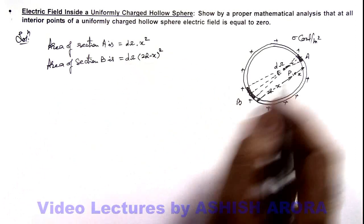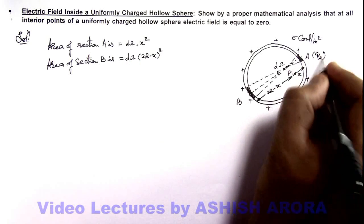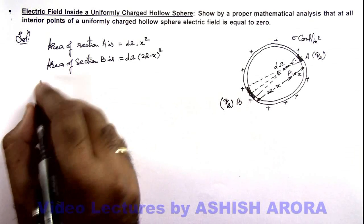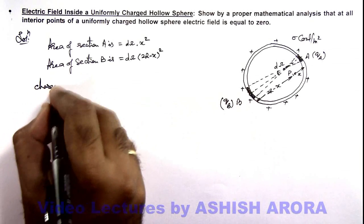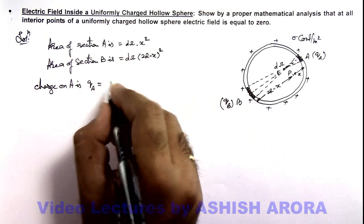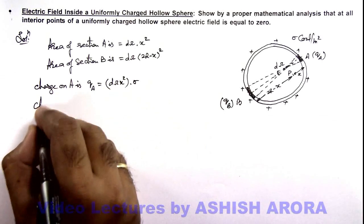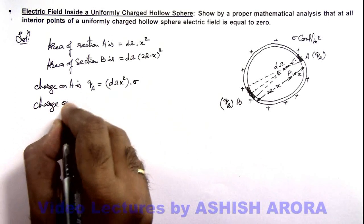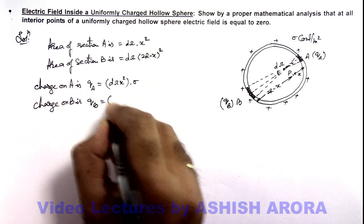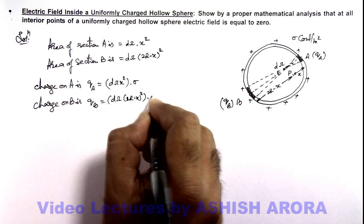Now if we calculate the charges on these segments, say it is having a charge qA due to the surface charge density and it is having a charge qB, we can calculate these charges as: charge on A, qA, can be written as dω·x² multiplied by sigma. And similarly, charge on B can be given as qB = dω·(2R minus x)² multiplied by sigma.